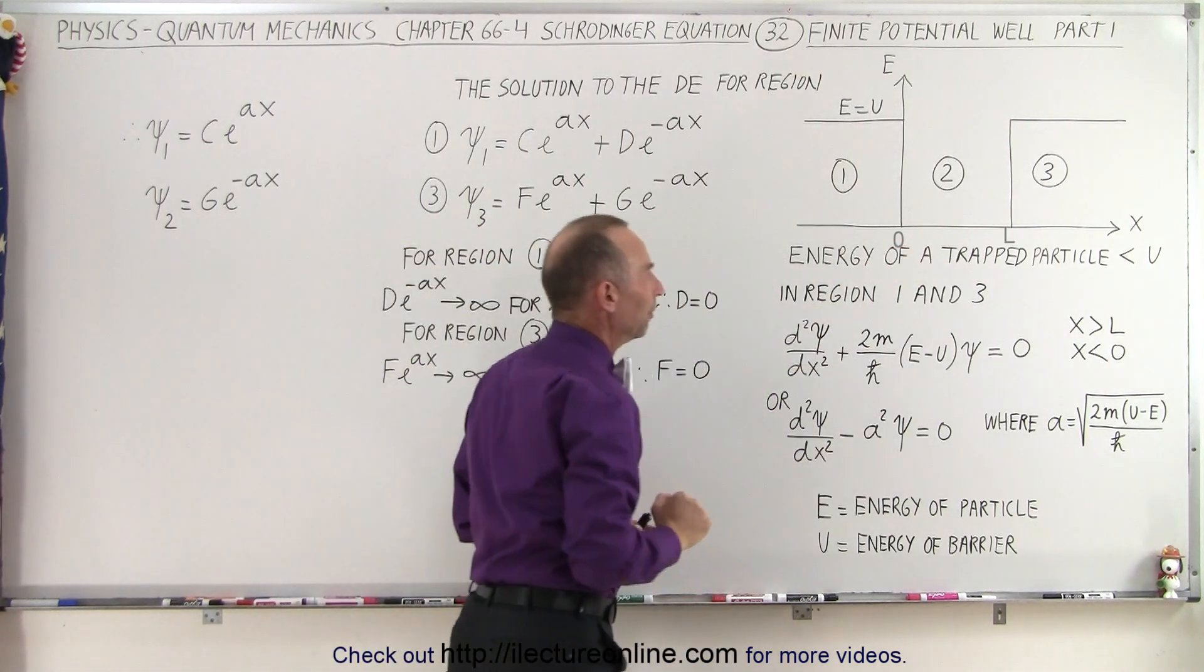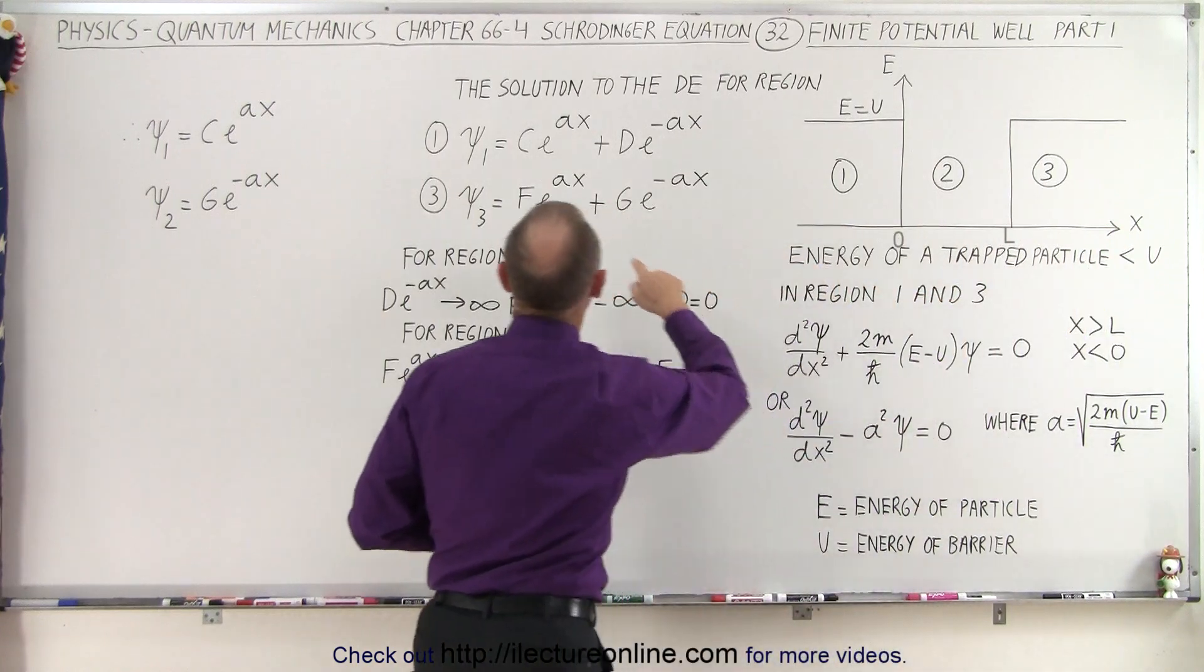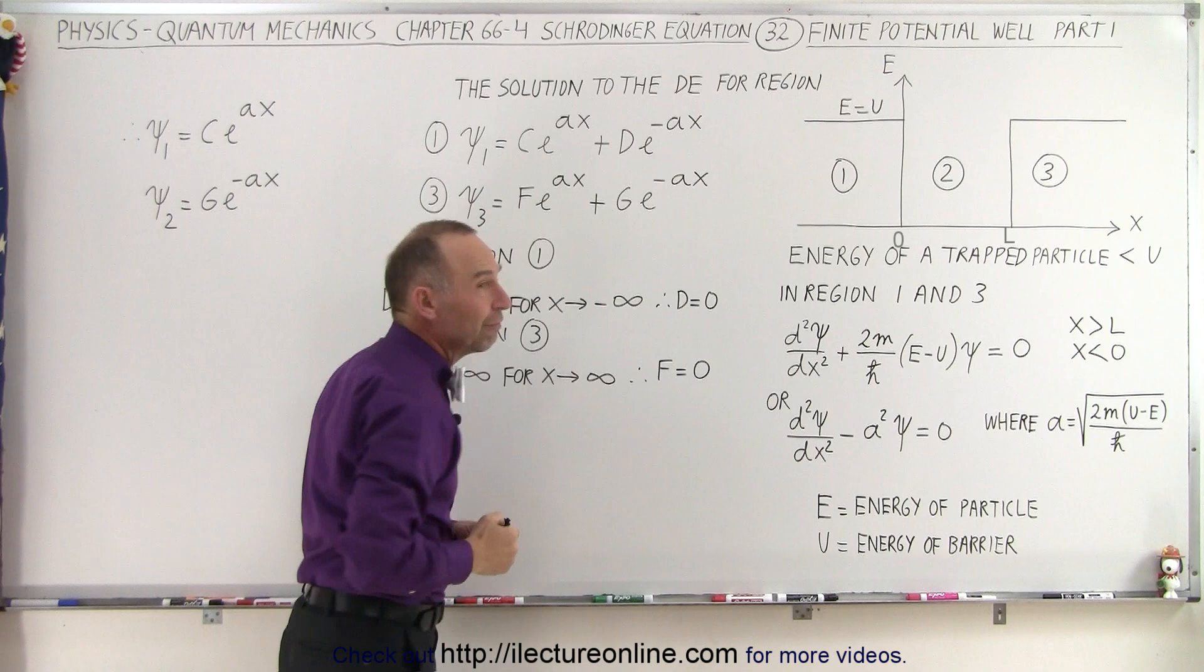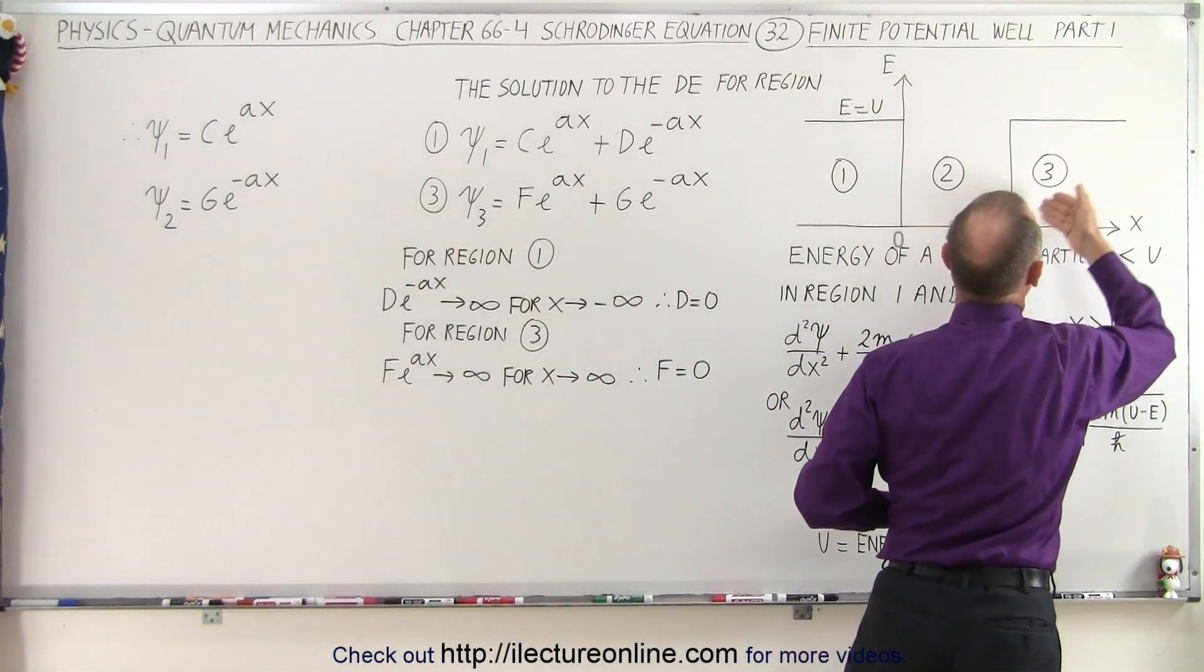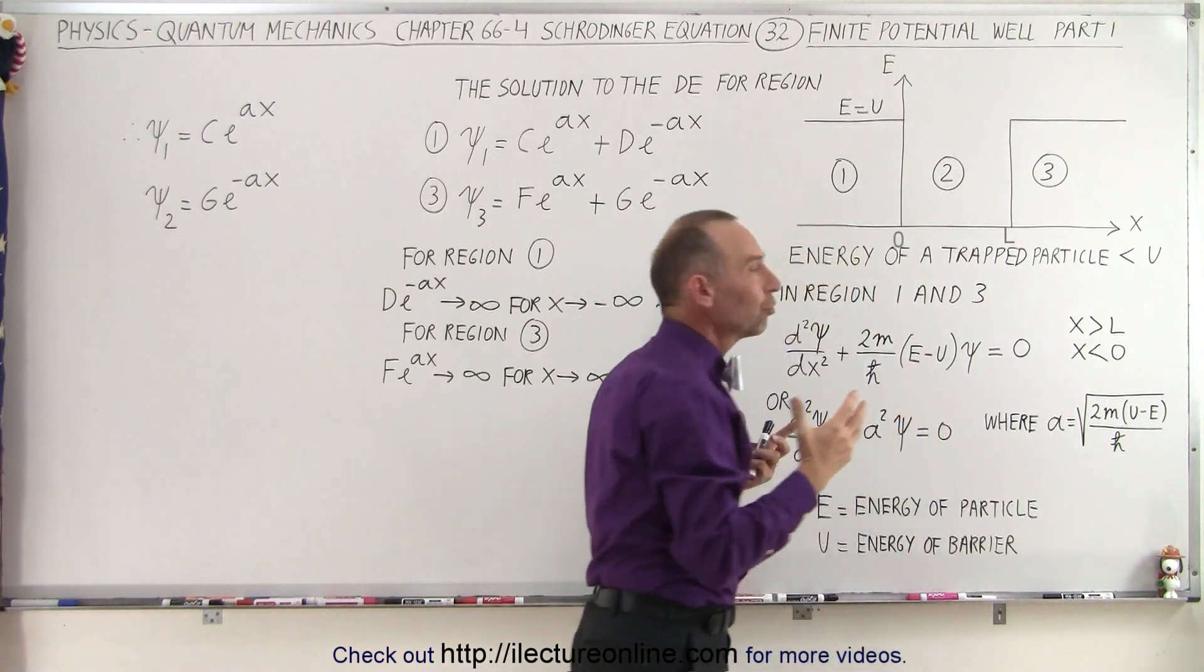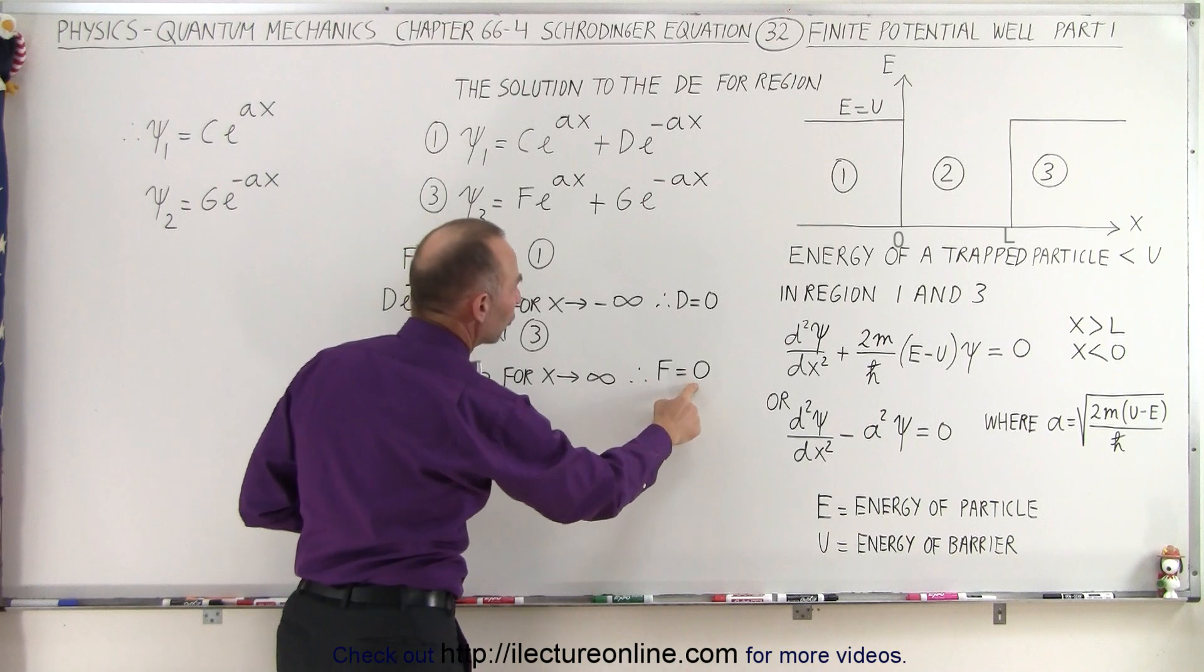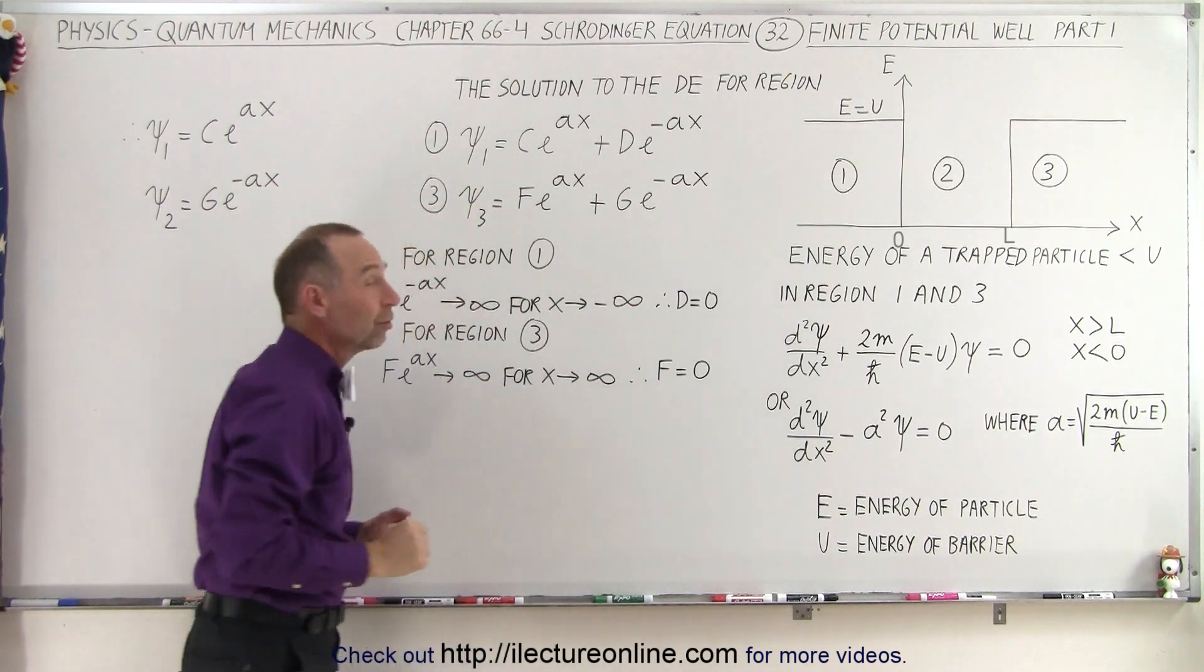In region 3, we have a similar problem. There, if we allow x to go to infinity, the term f e to the ax also will go to infinity as x goes to infinity. In other words, the value for the solution here will just increase like that exponentially, and that's also not a reasonable solution in that region. So therefore, we assume then that f also goes to 0, which takes away this portion of the solution for region 3,